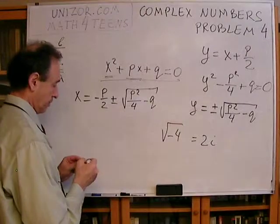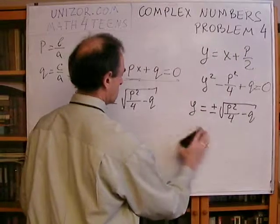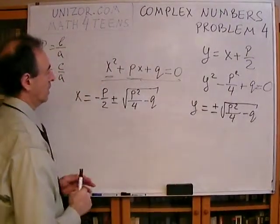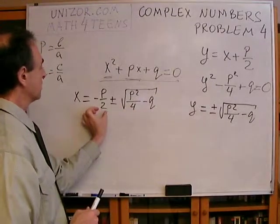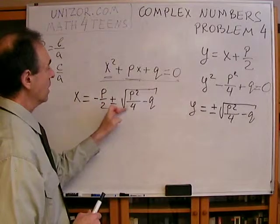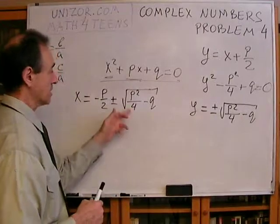So, basically, this represents, in this case, when this is negative, represents an imaginary part, so minus P divided by 2 is a real part, and plus or minus, you will have i with a certain number, a certain real number, as a coefficient.